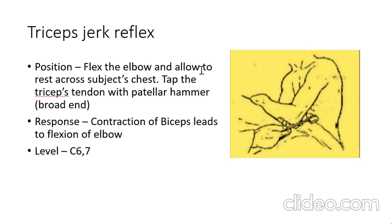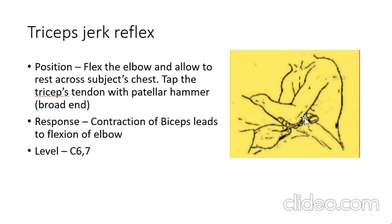For the tricep jerk, flex the elbow and allow it to rest across the subject's chest. Tap the tricep tendon with the broad end of the hammer. The response is contraction of the tricep, leading to extension of the elbow. The level is C6-C7.